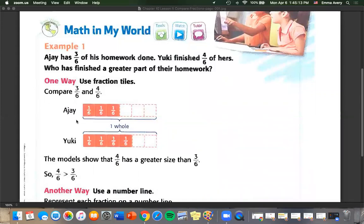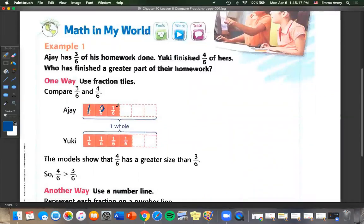We can see that AJ has one, two, three sixths, while Yuki has done one, two, three, four. So from this we can see that four sixths is greater than three sixths.